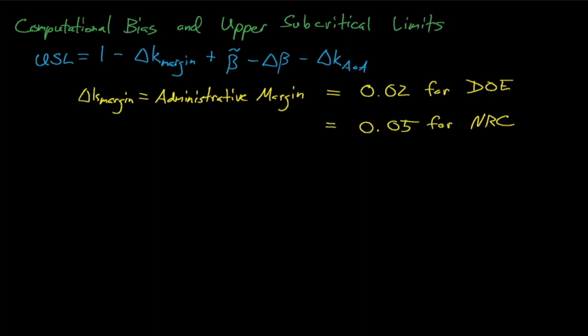To ensure that our system's eigenvalue remains below this limit and margin, our limit for a k effective must then add in the code bias, subtract the bias uncertainty, and then subtract the area of application uncertainty.